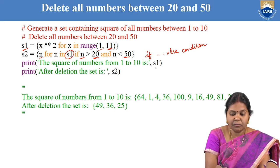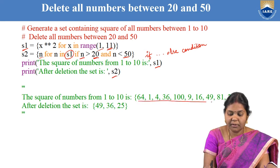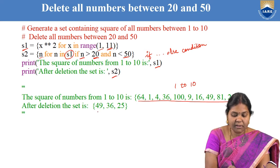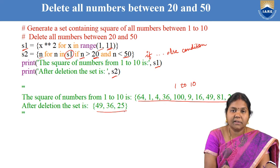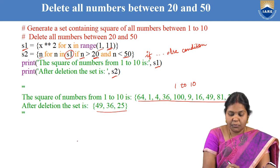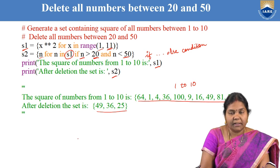You can see we are printing sets S1 and S2. S1 contains the squares of all numbers from 1 to 10. After deletion, only the remaining numbers 49, 36, and 25 are left in the set. This is the second example of set comprehension.